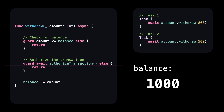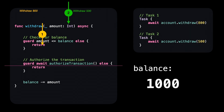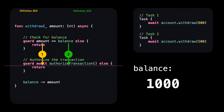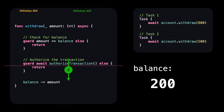But that's not the case. Here's what really happened. Task 1, which withdraws $800, executes first, checks the balance, and proceeds to authorize the transaction because the balance is sufficient. At this stage, due to reentrancy, task 2 enters the withdrawal function and performs its own balance check. Since the balance is still $1,000 at this point, task 2 also proceeds and authorizes the transaction. After task 1 gets authorized, it deducts $800 from the account, followed by task 2 deducting $500 — resulting in a negative account balance. Clearly, this is not what we want.